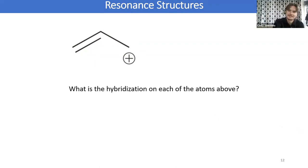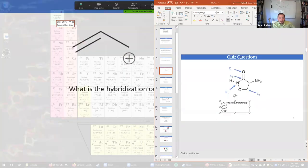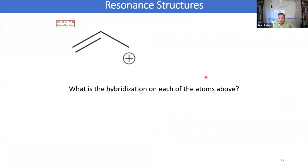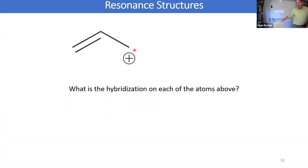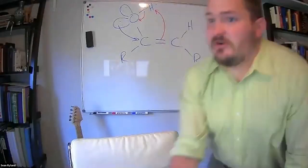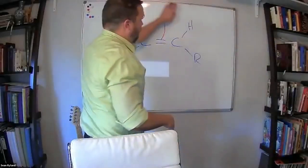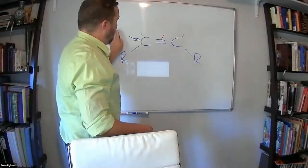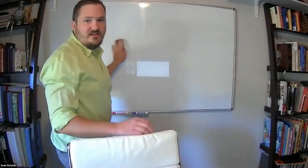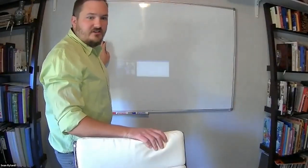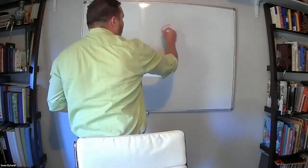It should be sp2, right? You've got three electron groups. And that last one — the carbocation — in order to get a positive charge on the carbon, that means the carbon has to have access to only three electrons. Remember, when we're doing the formal charge, we're counting how many bonds and lone pairs there are and comparing those electrons to the periodic table.